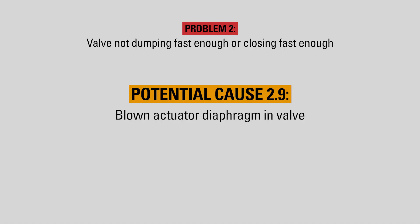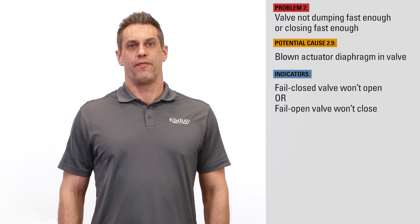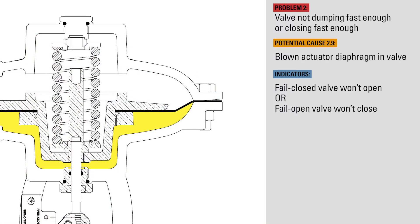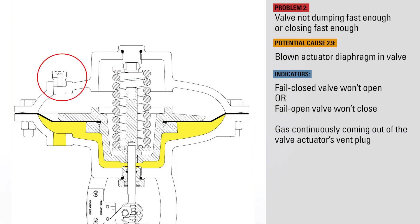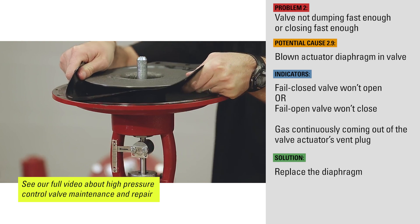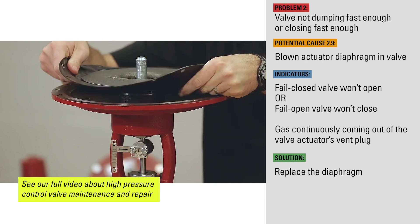If your fail closed valve won't open, or if your fail open valve won't close, it may have a ruptured actuator diaphragm, which is allowing the supply gas into both chambers of the actuator. The best indicator of this will be gas continuously coming out of the valve's actuator vent plug. To fix this, block and bleed the valve, then open the actuator and replace the diaphragm.